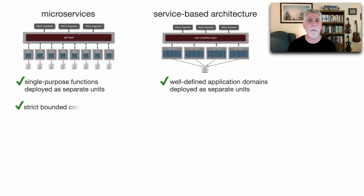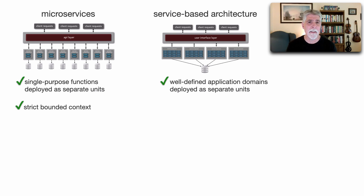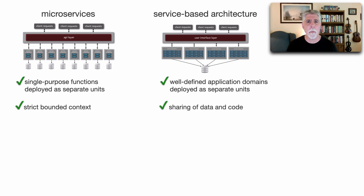The other core difference is that with microservices we form strict bounded contexts between the service and the data it owns, therefore requiring us to break apart our database. However, with service-based architecture we can share data as well as share code. This is one of the core differences between microservices and service-based architecture.